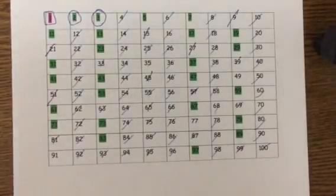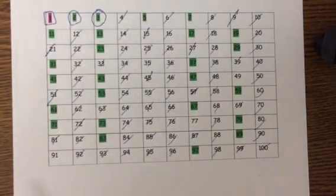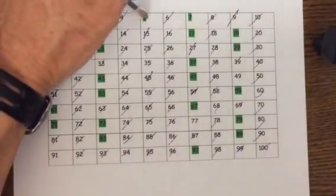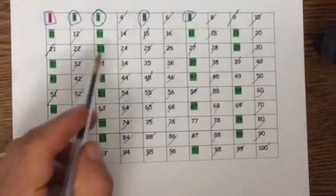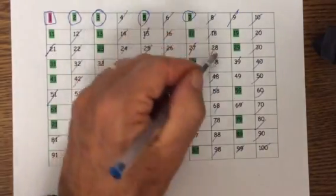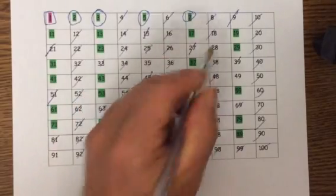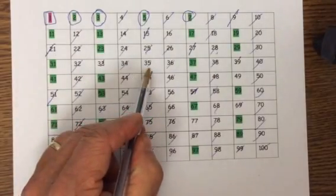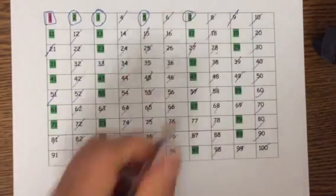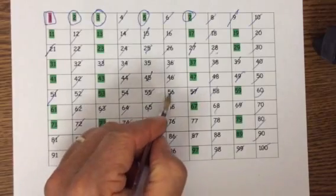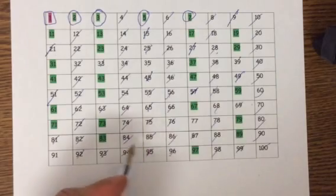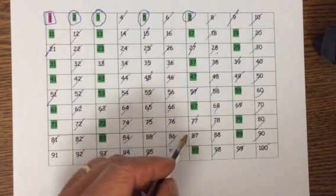And then now to find all the prime numbers between 1 and 100 is now just repeat that with 7. So now we have 7. I'm going to circle those, 5 and 7 because they're prime. So we have 7, 14, 21, 28, 35, 42, 49, 56, 63, 70, 77, 84.